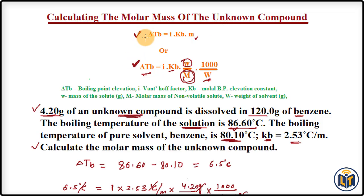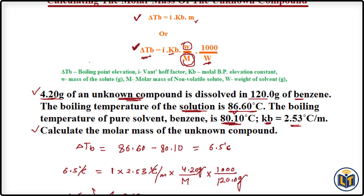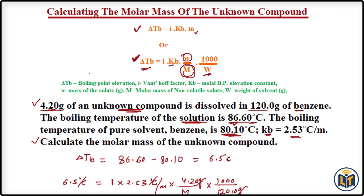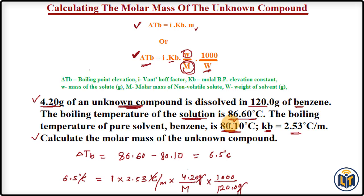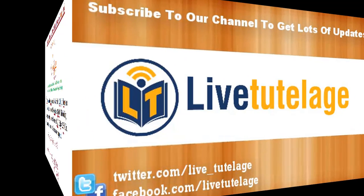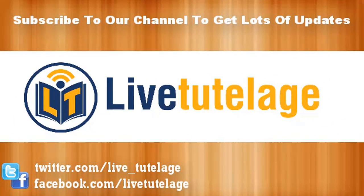To summarize, we first calculated Delta TB from the boiling points of the solution and the solvent, then applied the boiling point elevation formula to calculate the molar mass of the unknown compound. Thank you.